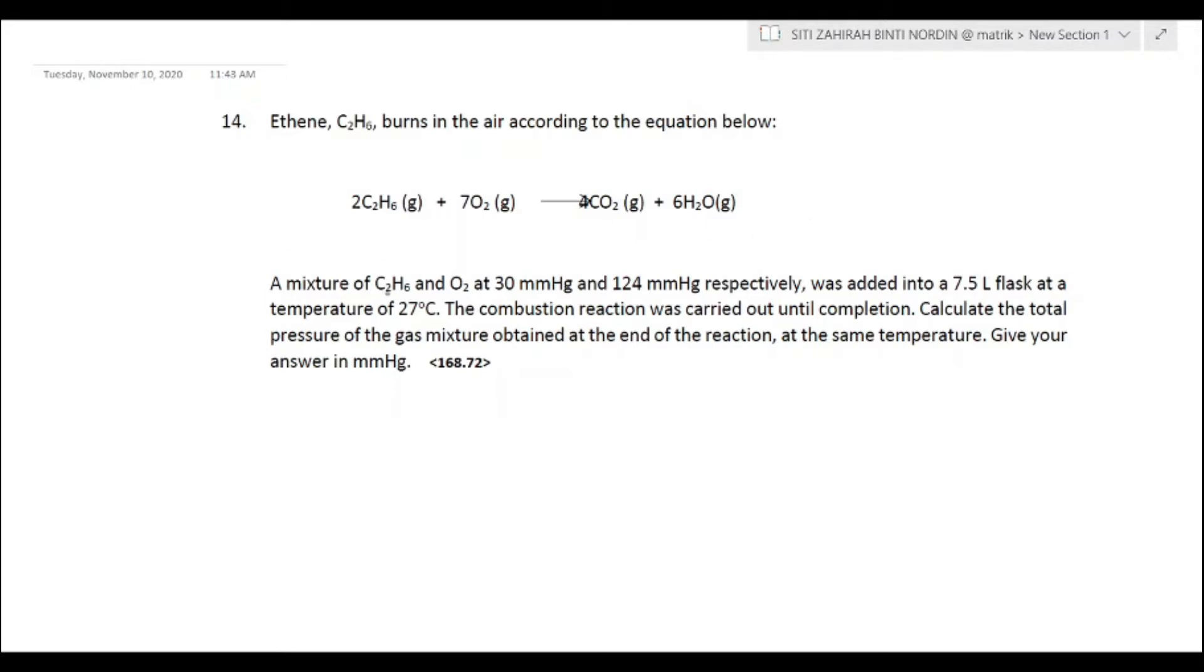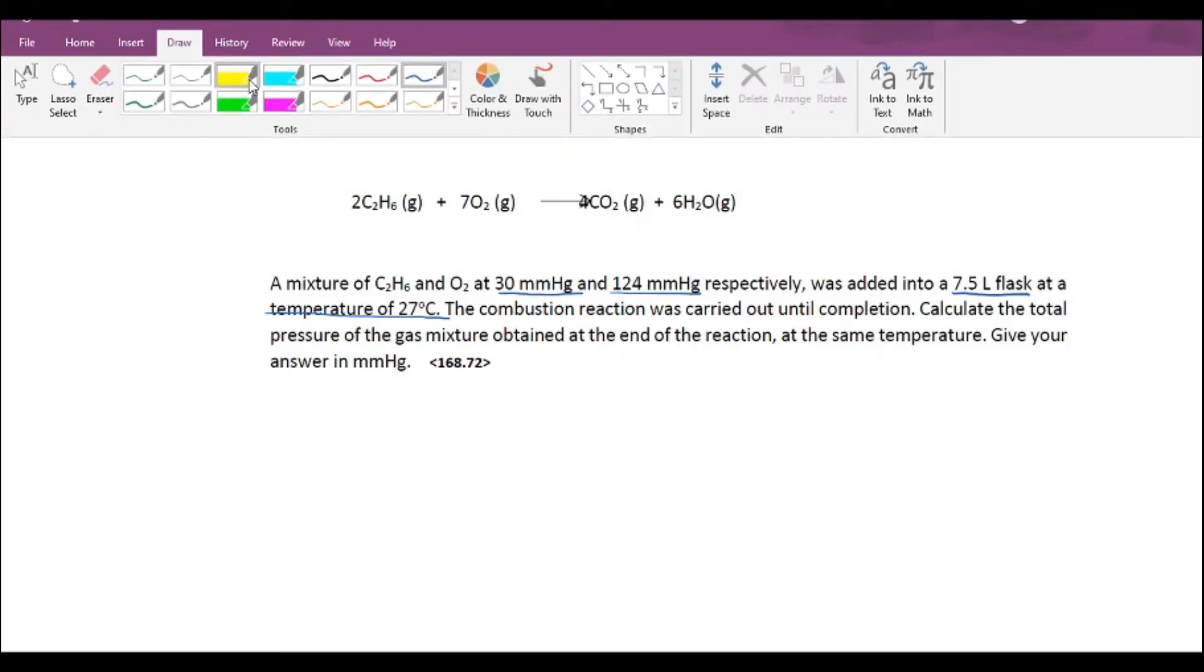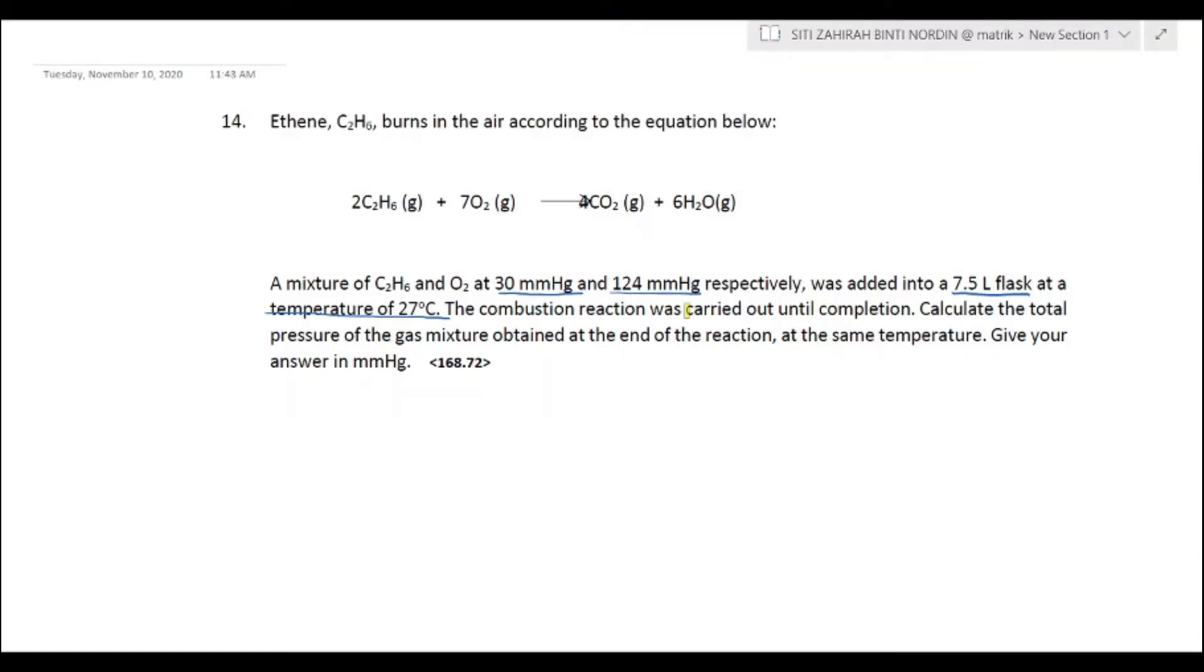A mixture of C2H6 and O2 at 30 mmHg and 124 mmHg respectively was added into a 7.5 liter flask at a temperature of 27 degrees Celsius. The combustion reaction was carried out until completion.